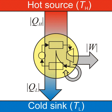The theoretical maximum efficiency of any heat engine depends only on the temperatures it operates between. This efficiency is usually derived using an ideal imaginary heat engine such as the Carnot heat engine, although other engines using different cycles can also attain maximum efficiency.